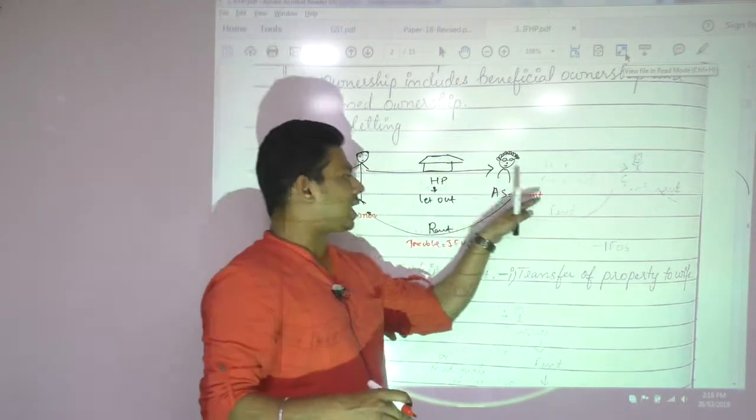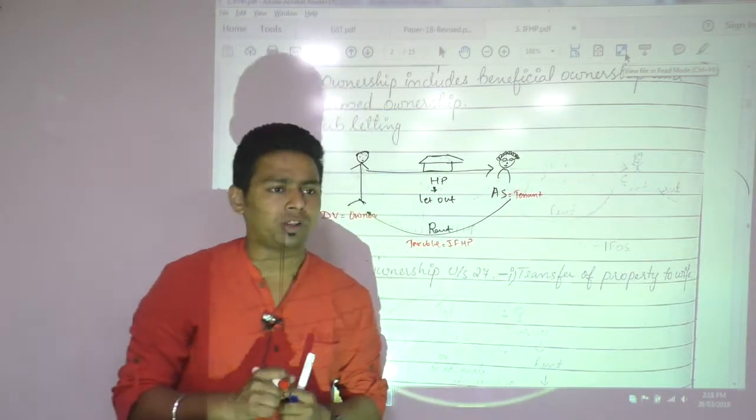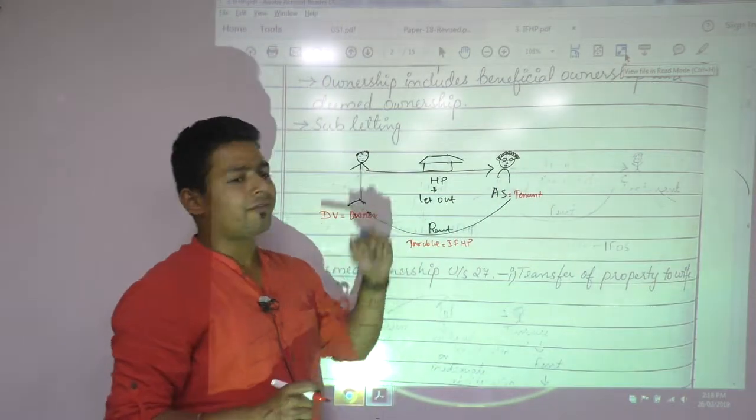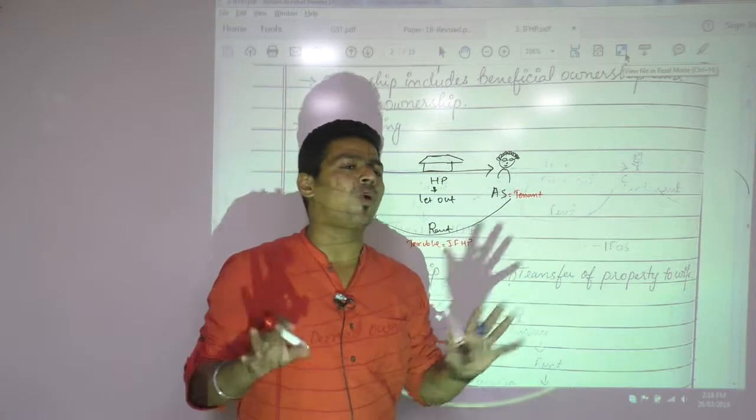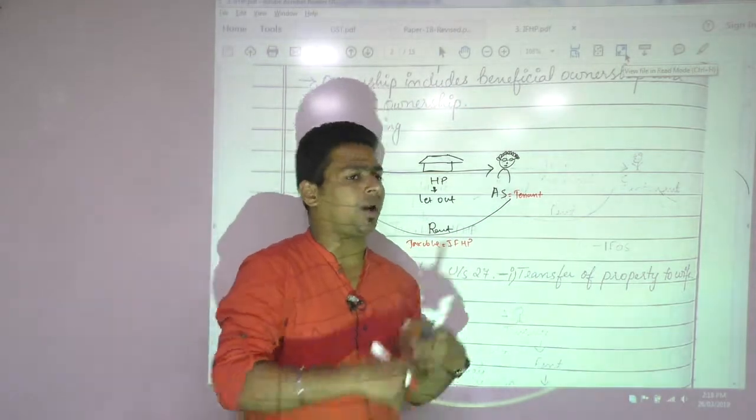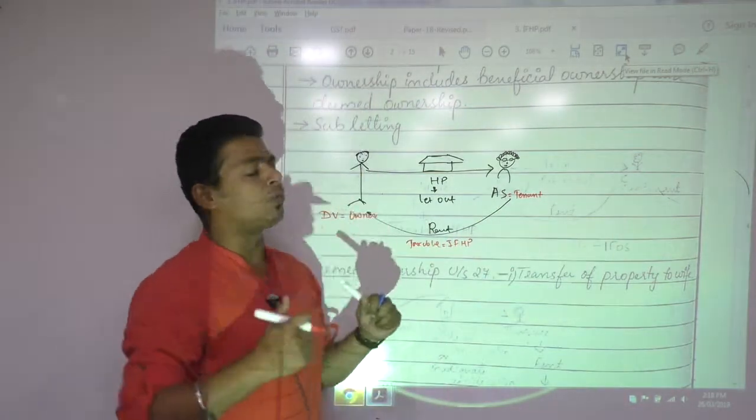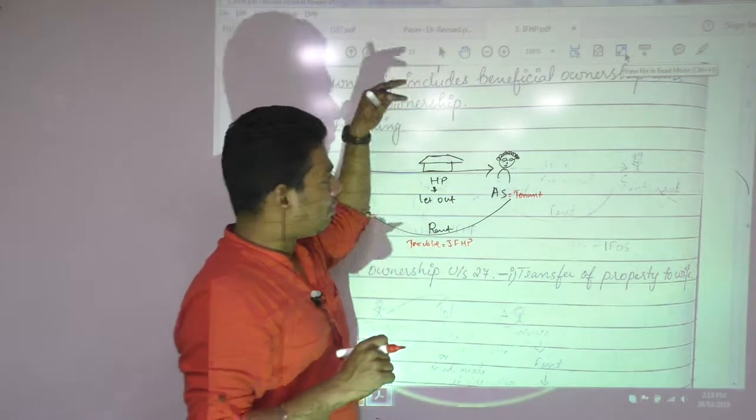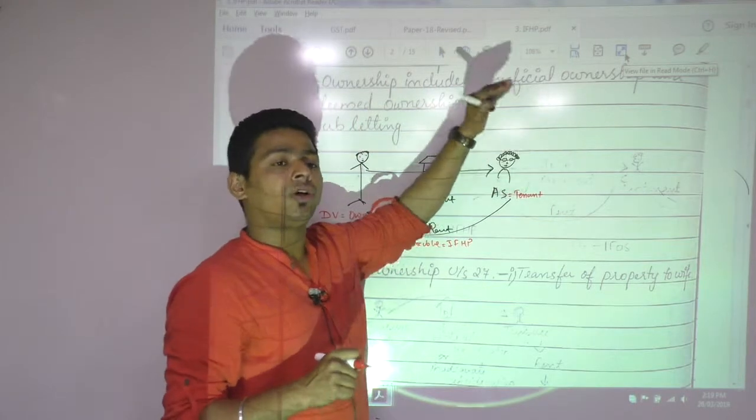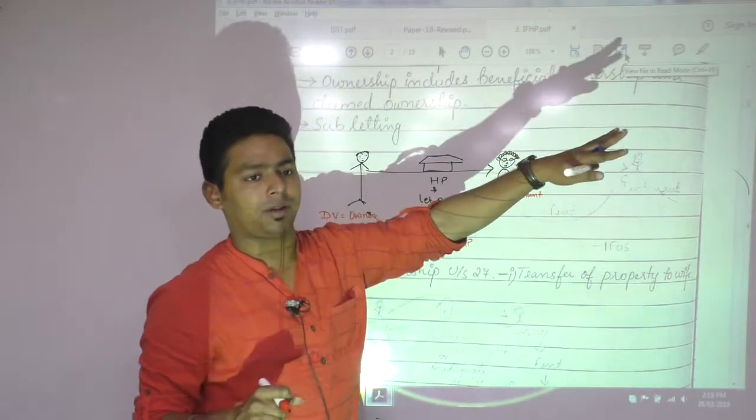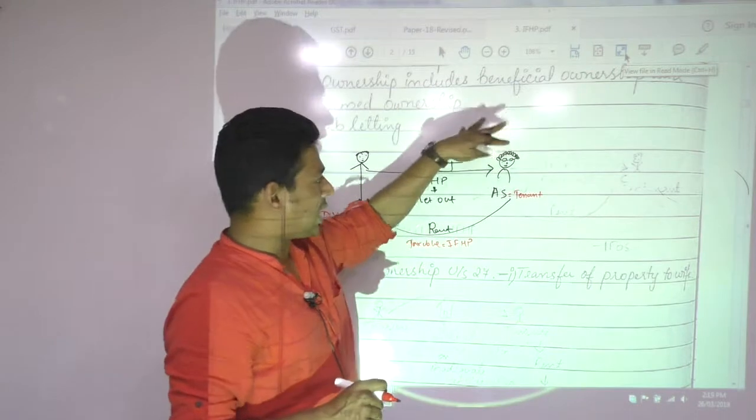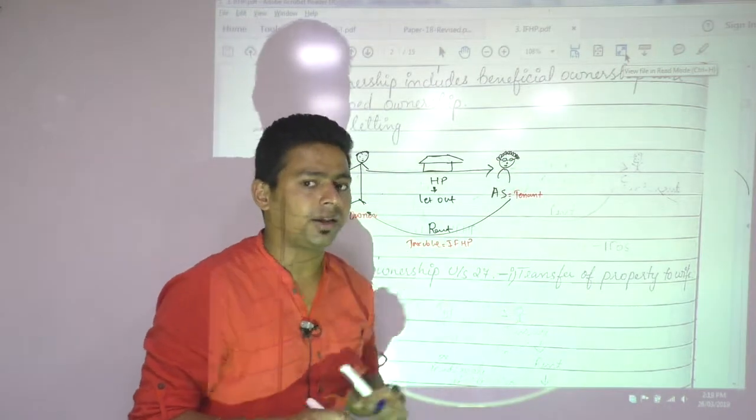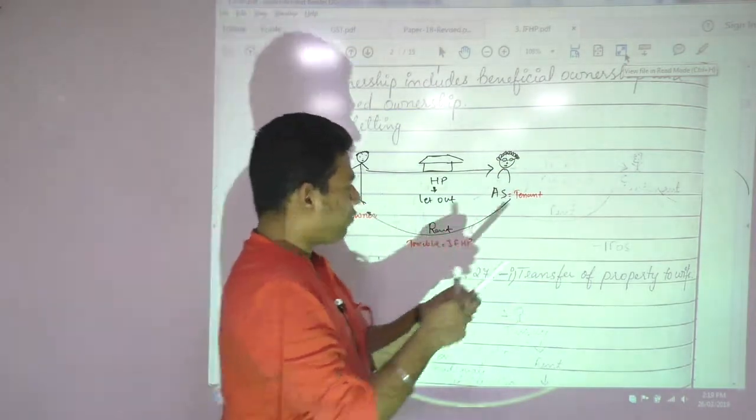Now, this tenant had signed a five-year agreement with the owner. After two years, the tenant doesn't want this house property - he wants a better one. He wants to move out, but he still has tenancy rights for five years. The owner has allowed him to sub-let, so the tenancy right includes sub-tenancy rights. He will find a sub-tenant.